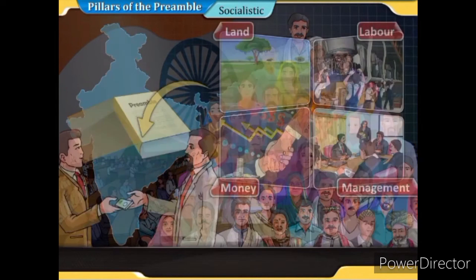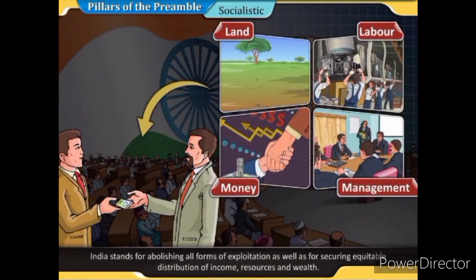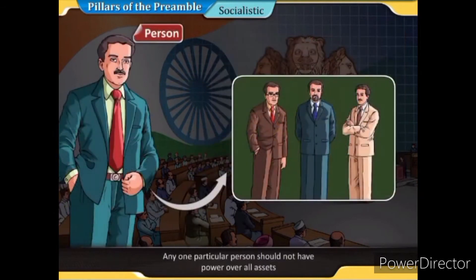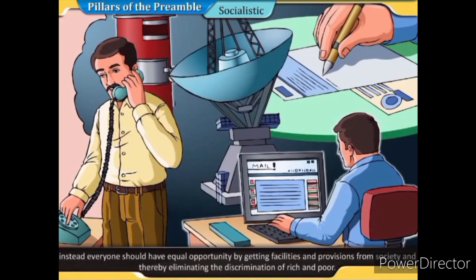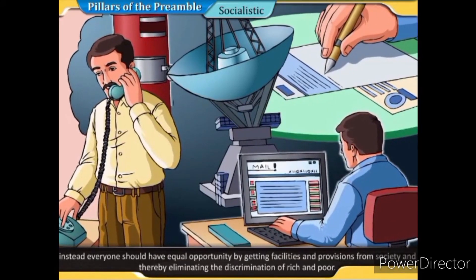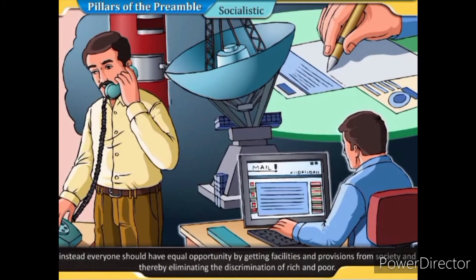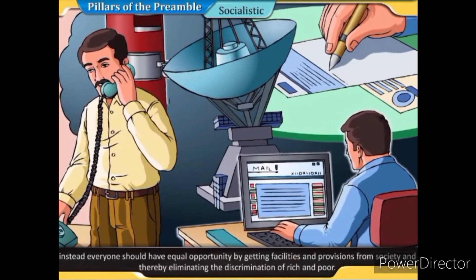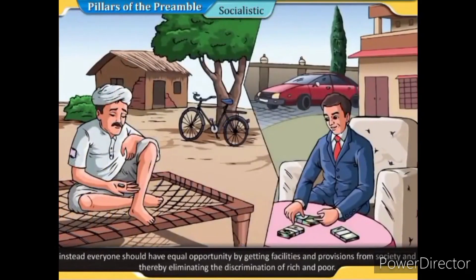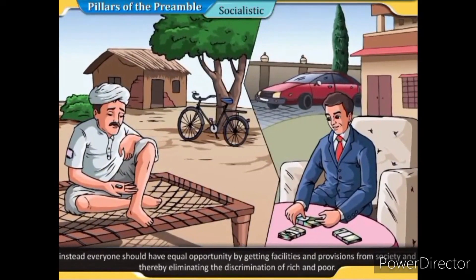It reflects the fact that India is committed to securing social, economic, and political justice for all its people. India stands for abolishing all forms of exploitation and for securing equitable distribution of income, resources, and wealth. No one particular person should have power over all assets; instead everyone should have equal opportunity by getting facilities and provisions from society, thereby eliminating discrimination between rich and poor.